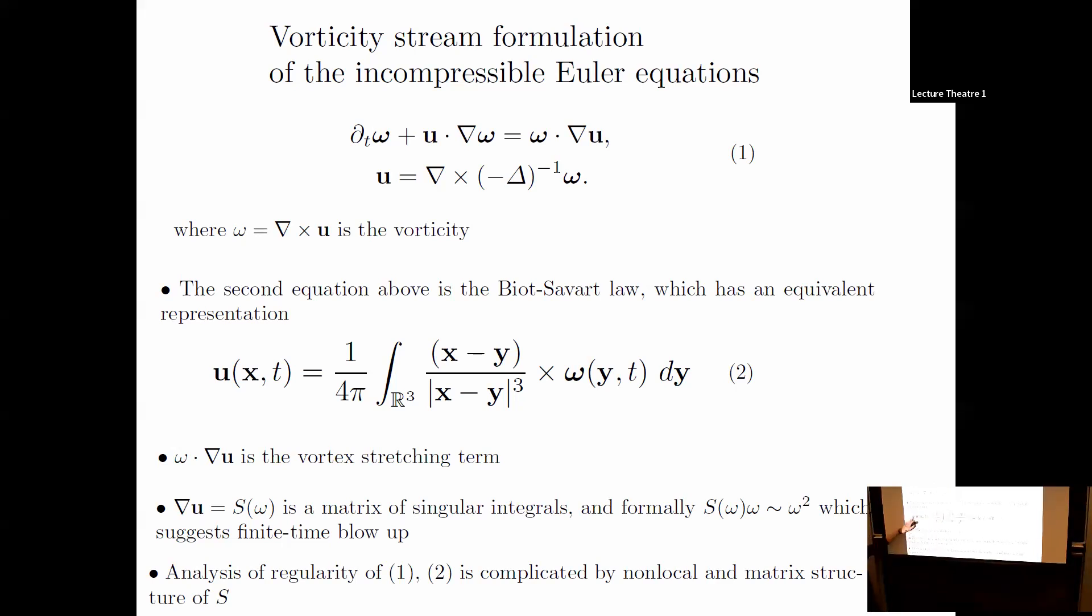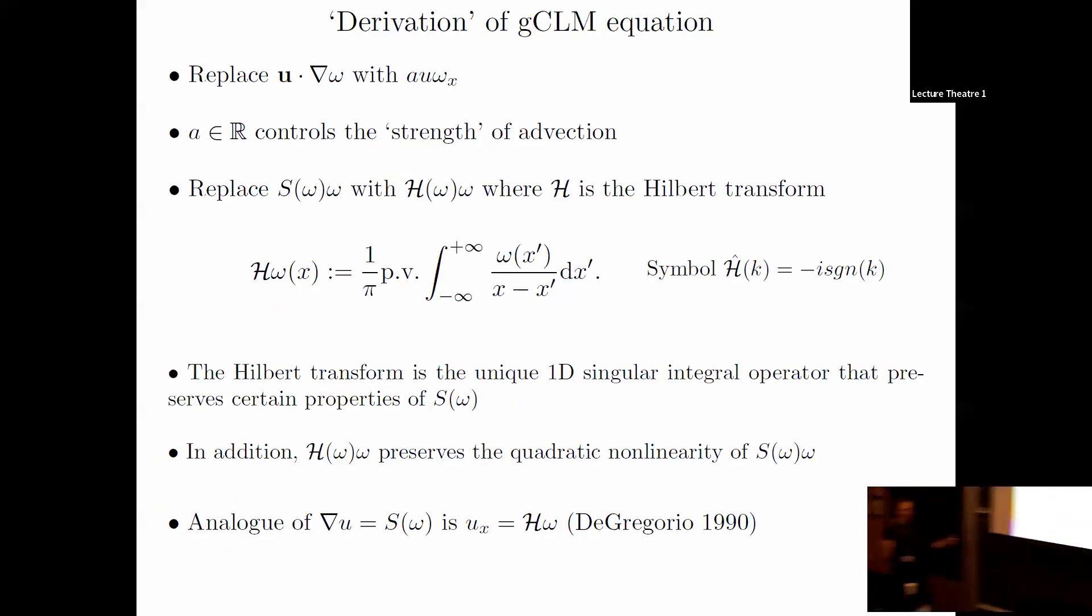If you informally take a gradient of this—call it S—that's a matrix of singular integrals. Formally, S times omega, the vortex stretching term, goes like omega squared. So d-omega/dt equals omega squared blows up. But the problem is harder because this is a matrix. Analysis of regularity is complicated by the non-local and matrix structure. Locally, you'd need vorticity to line up with an eigenfunction of an unstable eigenvalue. That's hard to analyze. That's why we come up with a simpler 1D model equation.